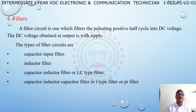Fourth block: filter. A filter circuit filters the pulsating DC voltage. The DC voltage obtained at the output contains ripple. The types of filter circuits are: capacitor filter, inductor filter, LC filter (capacitor-inductor), and pi-type filter (capacitor-inductor-capacitor).